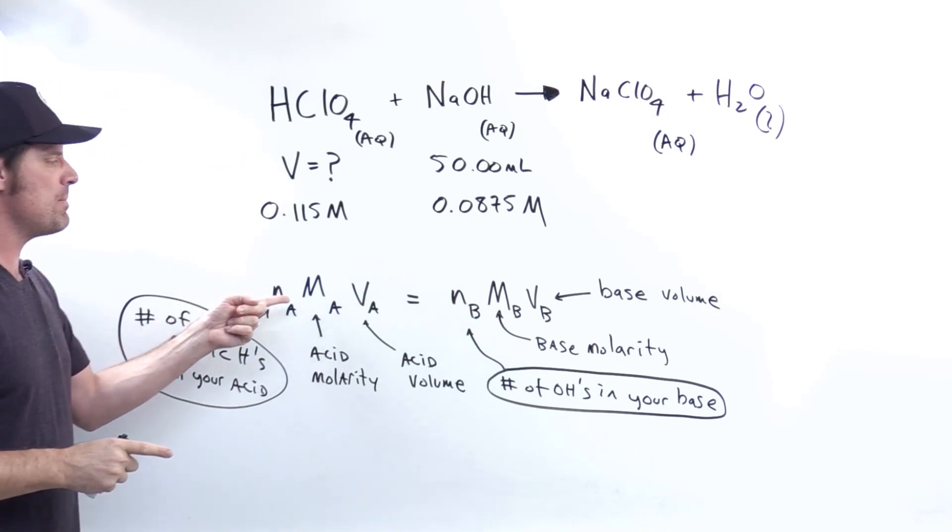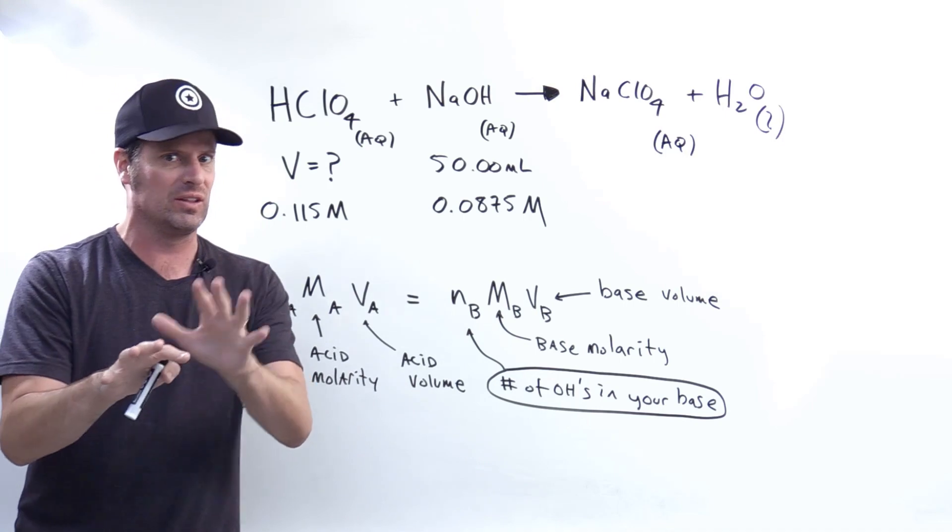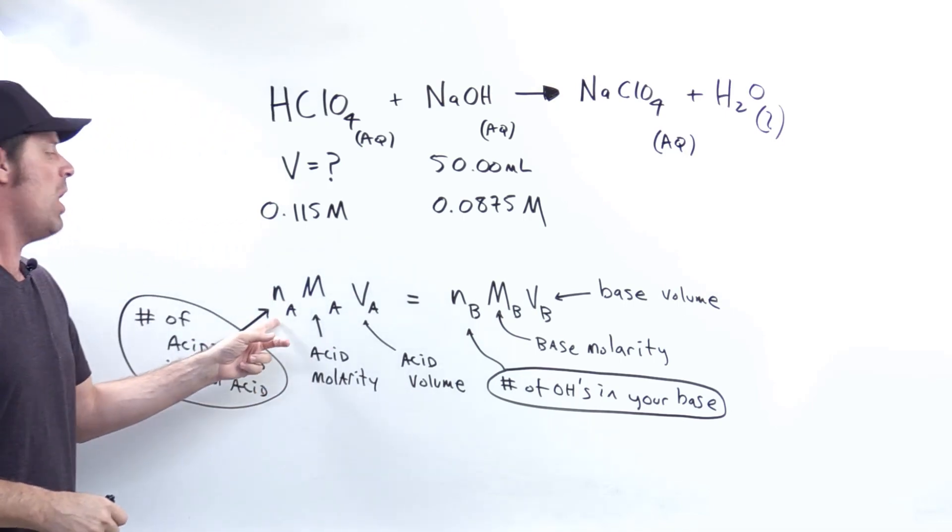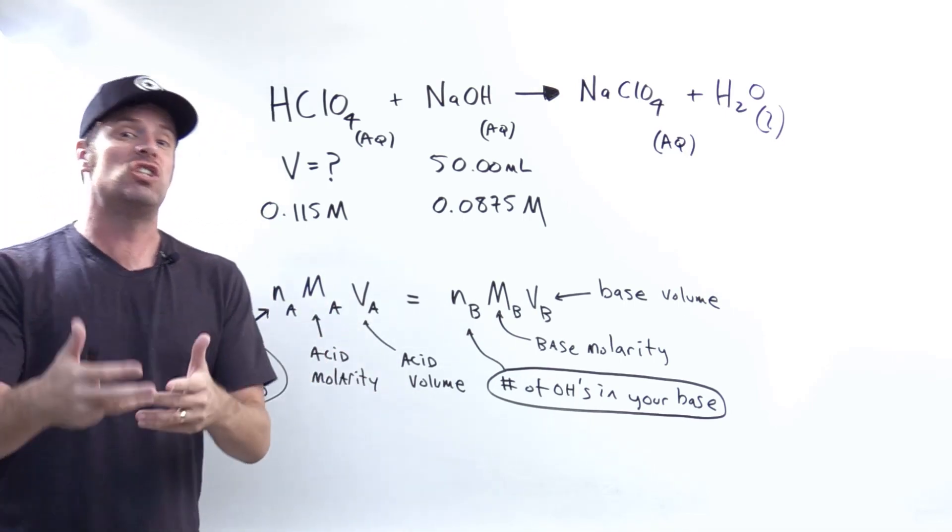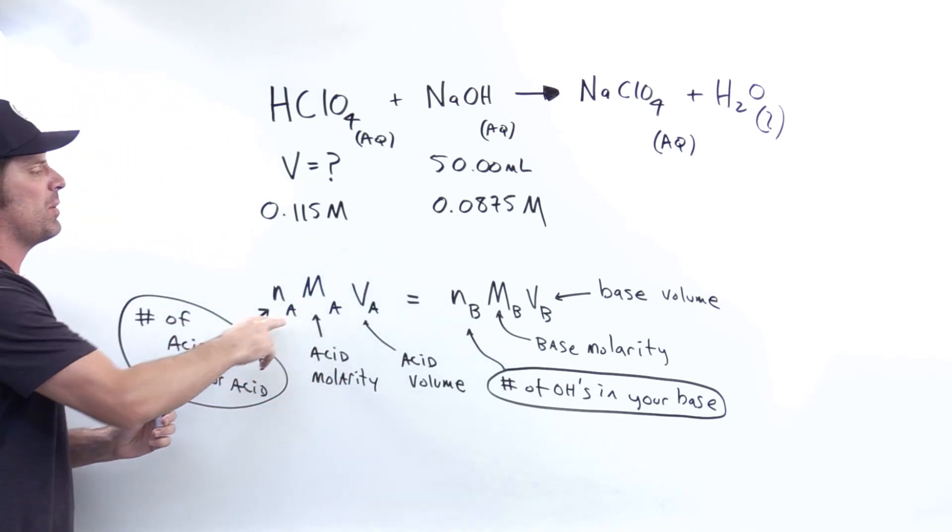This one right here: NAMAVA equals NBMBVB. Sometimes you might see this written as N1M1V1 equals N2M2V2. Either way is okay. I prefer this way because it tells me what I'm dealing with. All the A's stand for acids and the B's for bases.